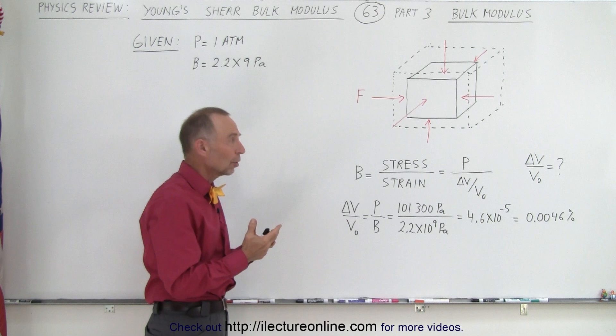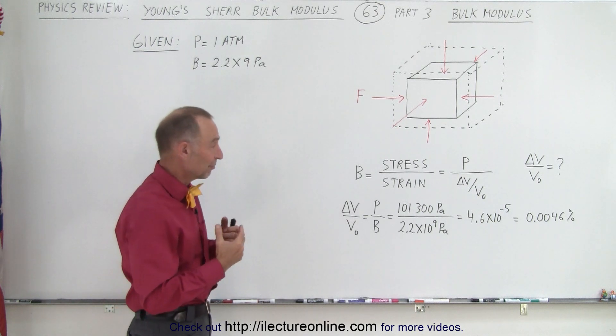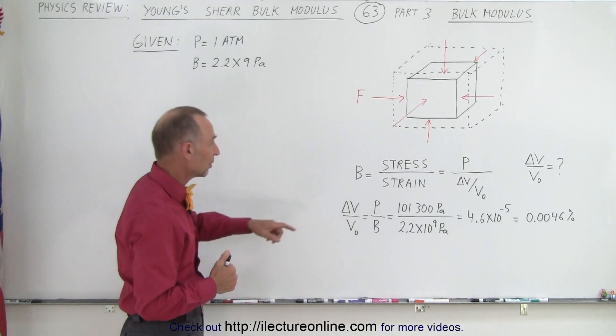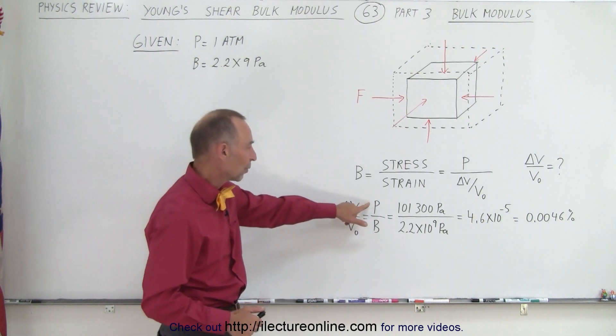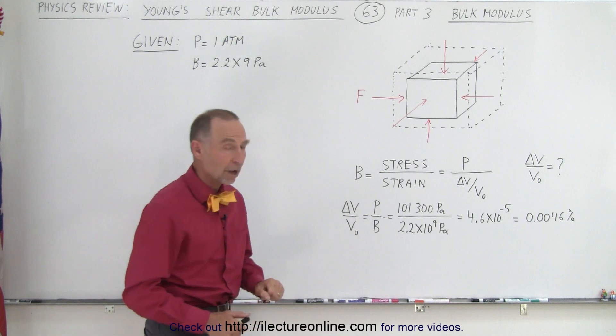So we don't need to know the original volume, it's simply a fractional change. So then if we solve that equation for the fractional change in the volume, then it simply becomes the ratio of the pressure divided by the bulk modulus.